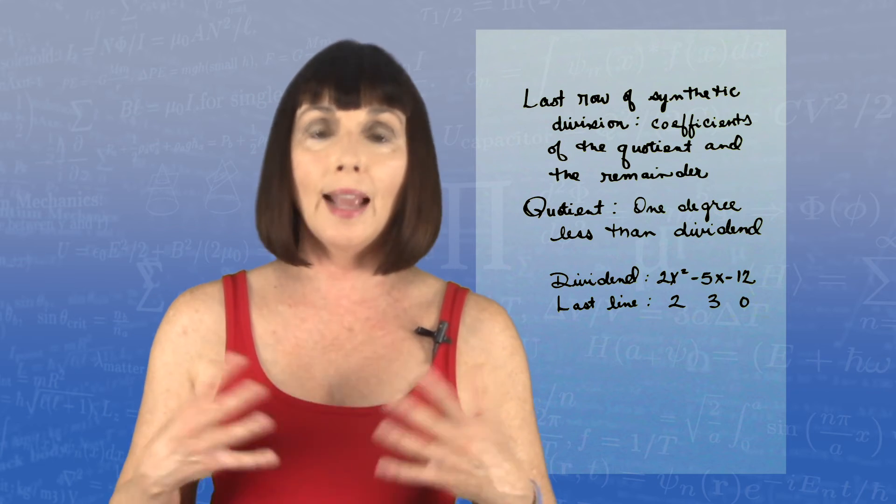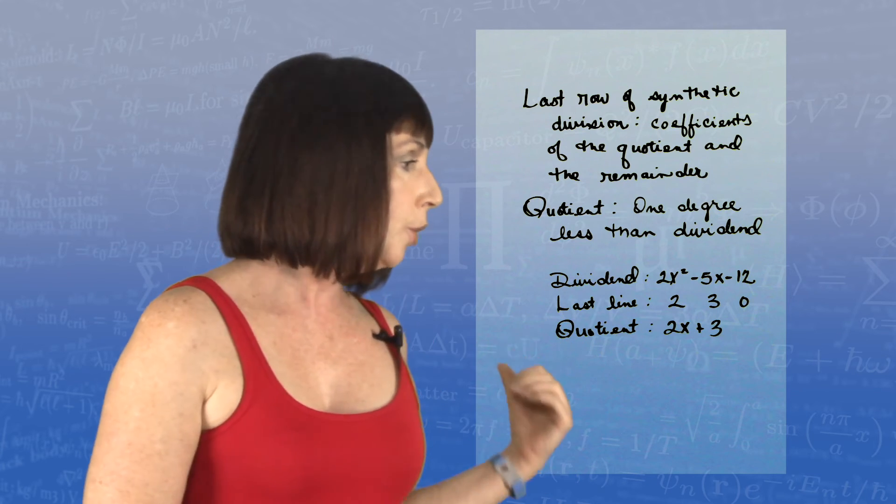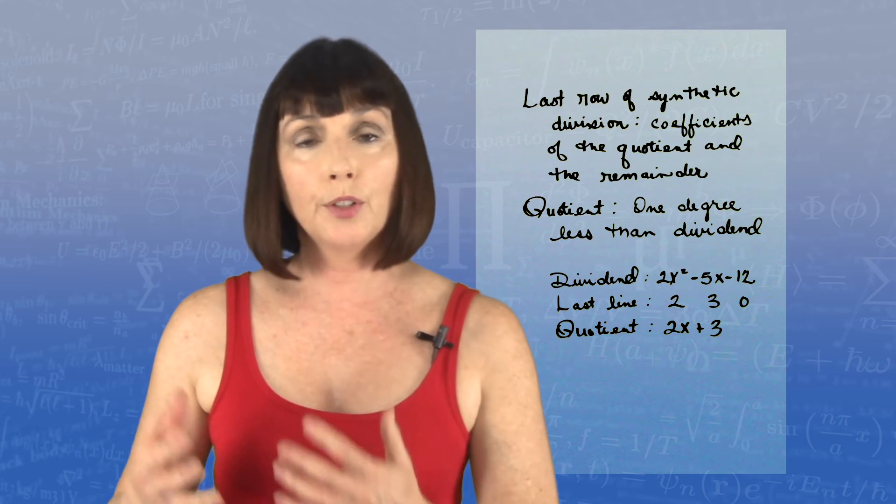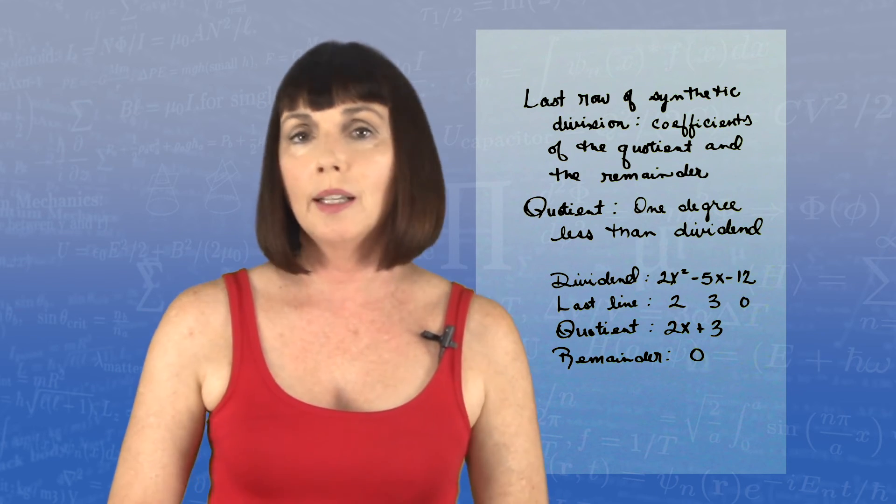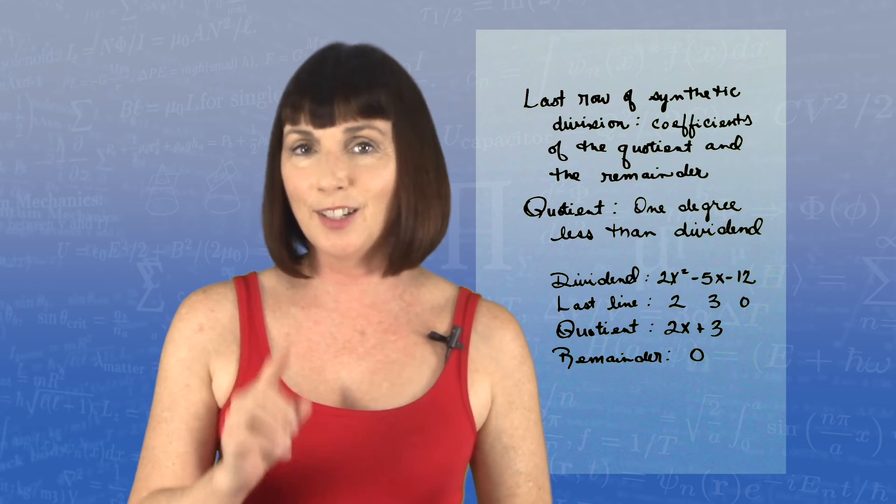So our answer was 2x plus 3 with a remainder of 0. And as it should be, our quotient is one degree less than our dividend.